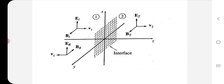A part of the electromagnetic wave falling at the interface gets transmitted into medium 2, where z is greater than 0. This is the transmitted part of the electromagnetic wave. Its real electric field is ET, along the x direction, the real magnetic field is BT along the y direction, and it travels with velocity V2.